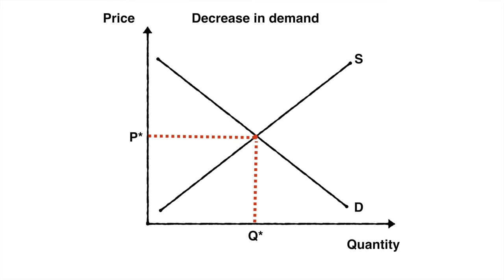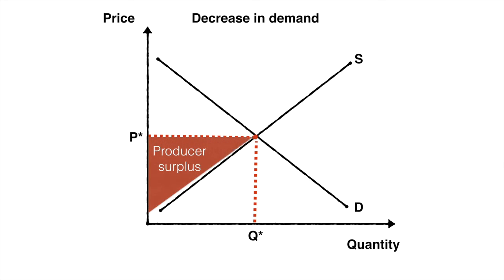Let's now examine a decrease in demand and the change it has on producer surplus. From our initial state, we see the original producer surplus as shown in the earlier part of the video. Let's remove it and decrease demand.